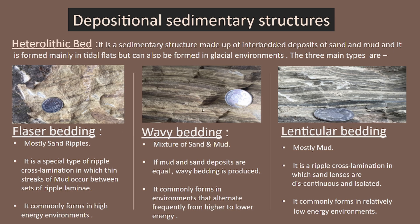Wavy bedding is a mixture of approximately 50-50 sand and mud, usually common in environments that alternate frequently from higher to lower energy. Lenticular bedding is mainly mud-dominated — it is a ripple cross lamination in which sand lenses are discontinuous and isolated, usually forming under low energy conditions.